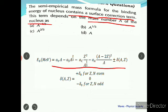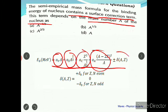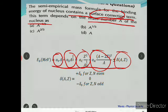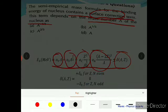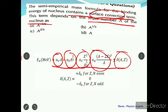We have the volume term, the surface term, the Coulomb term, the asymmetry term, and the parity term. The question asks us to find out the surface correction term. Let me take a black pen and make it clearer. The surface term is directly proportional to A to the power 2/3.